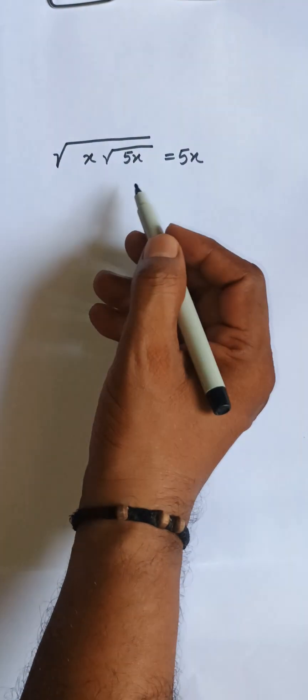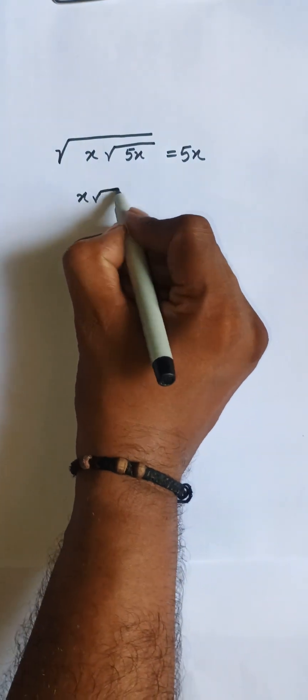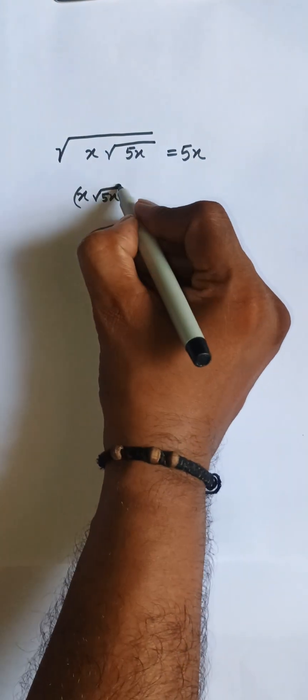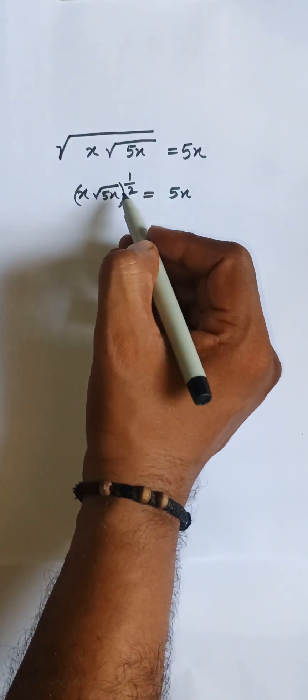Hello everyone, let's solve this problem. This can be written as x√(5x) to the power 1/2, that is equal to 5x. I need to remove this power 1/2 by